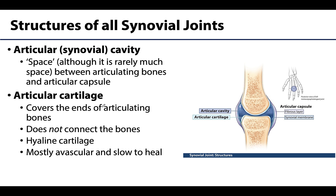The articular or synovial cavity is the literal space between the two articulating bones but within the articular capsule. In illustrations you generally see a large space indicated, but there really isn't a lot of space within a true joint cavity. The fact that there is some space, however, allows for easier and greater movement in these types of synovial joints.